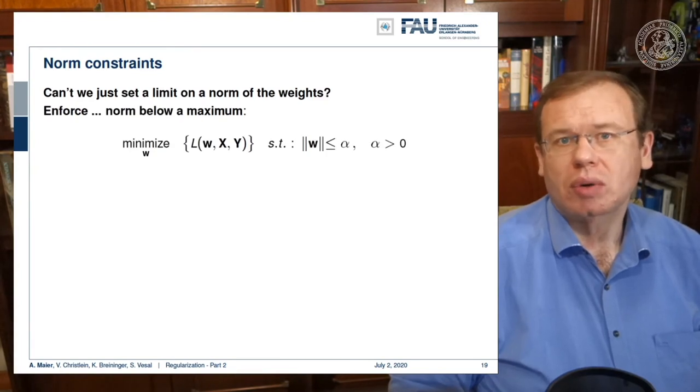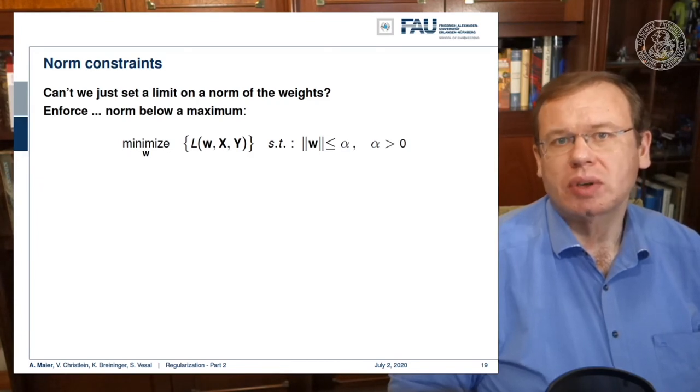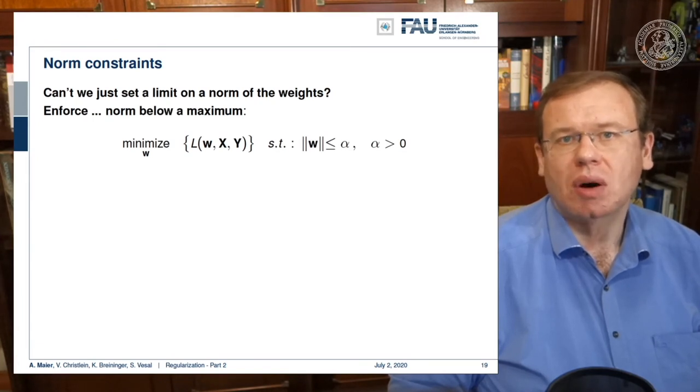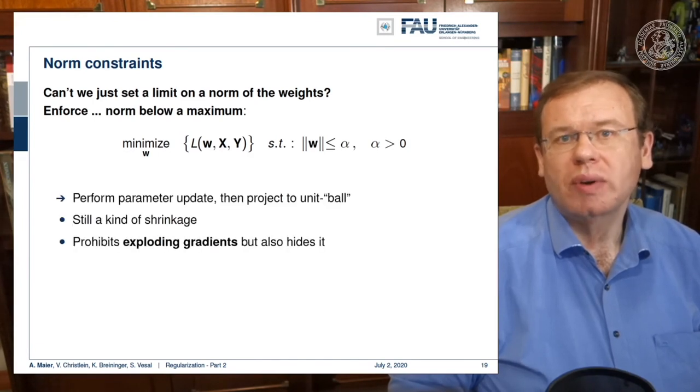There are also more known constraints. For example, we can set a limit on the norm of the weights. Here we enforce them to be below a certain maximum. We want to have the magnitude of W to be below alpha, where alpha is a positive constant. If you do so, we essentially have to project onto the unit ball with every parameter update, and this is again a kind of shrinkage that essentially prohibits exploding gradients. Be careful, it may also simply hide them such that you don't see them anymore.